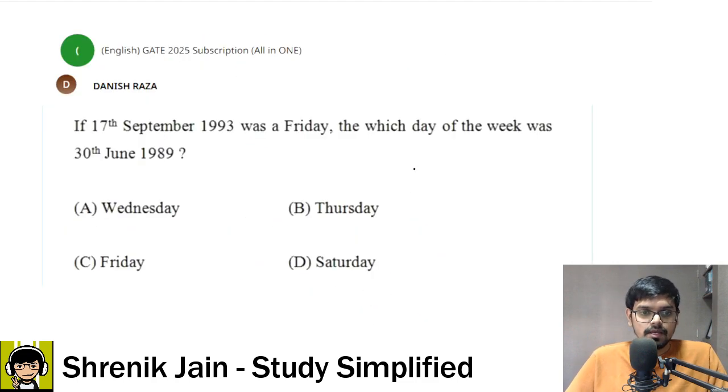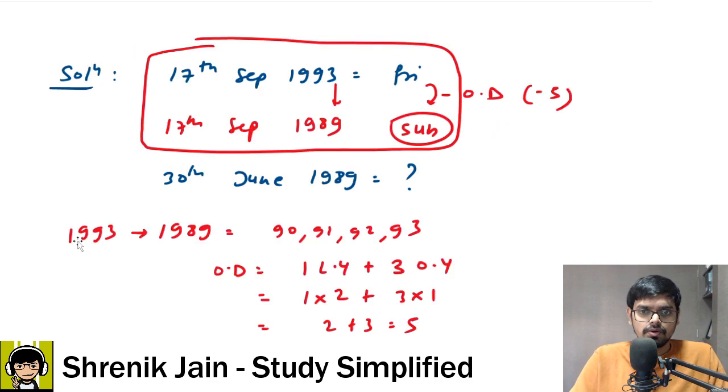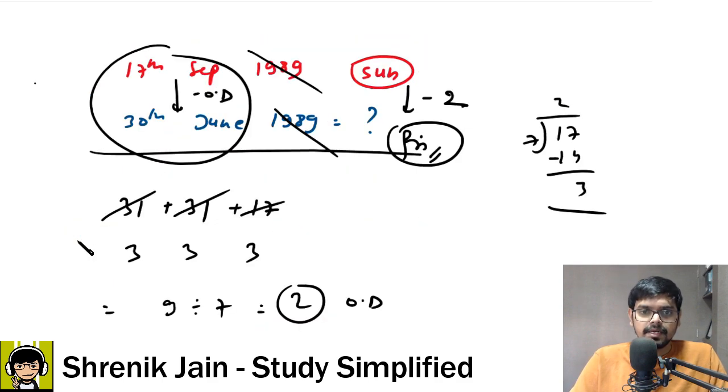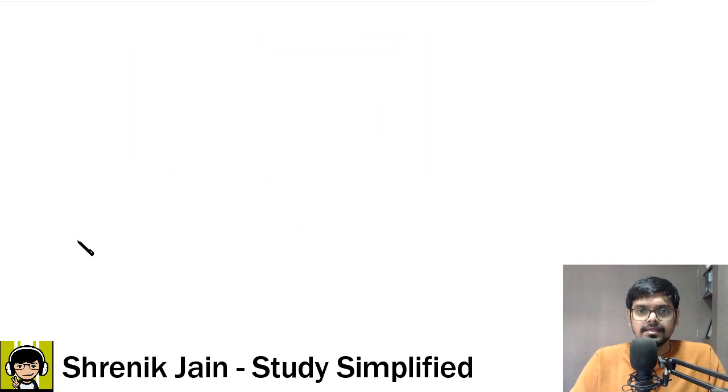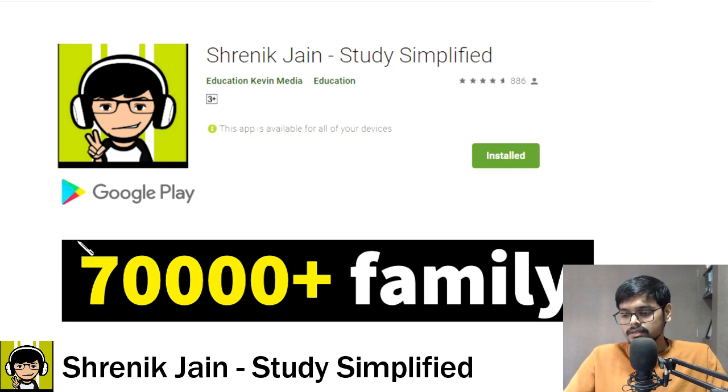That is the final answer - option C. I hope you understood this trick of how to split up and get the answer. That's it for today. I hope you enjoyed the class. If you don't know the concepts of aptitude, the quants, the reasoning, the verbal, you can download the Shrenik Jain Study Simplified app.